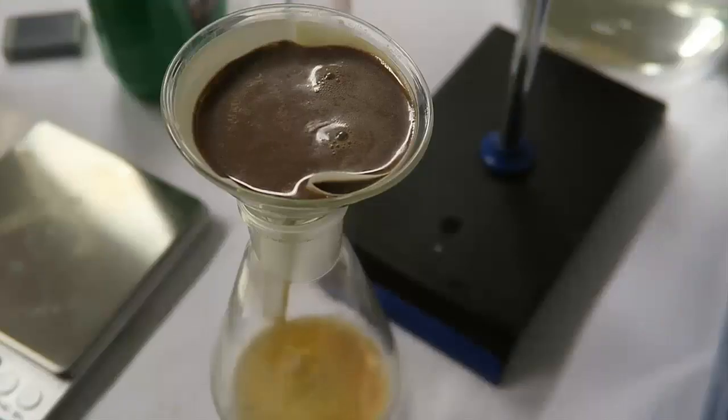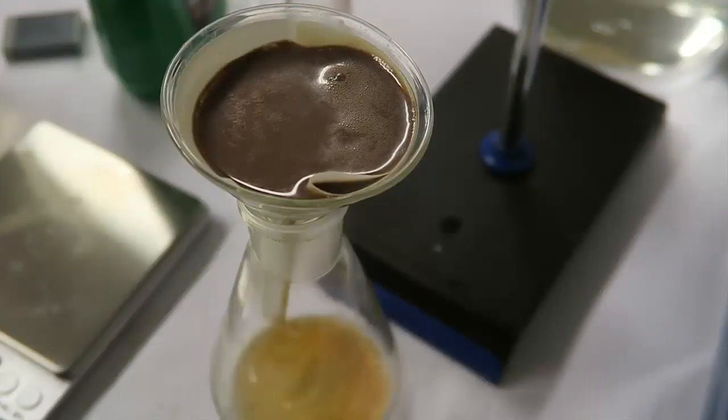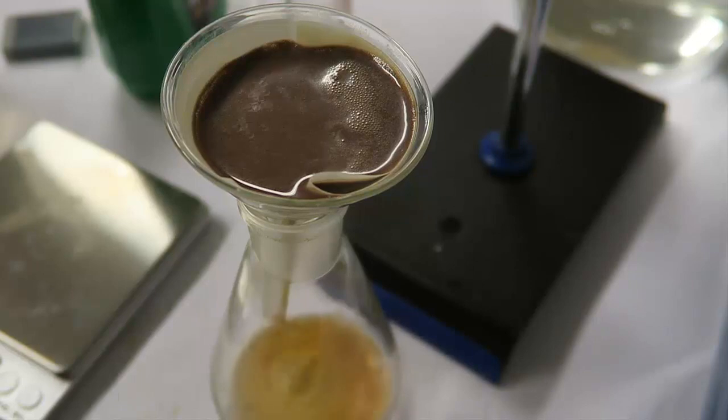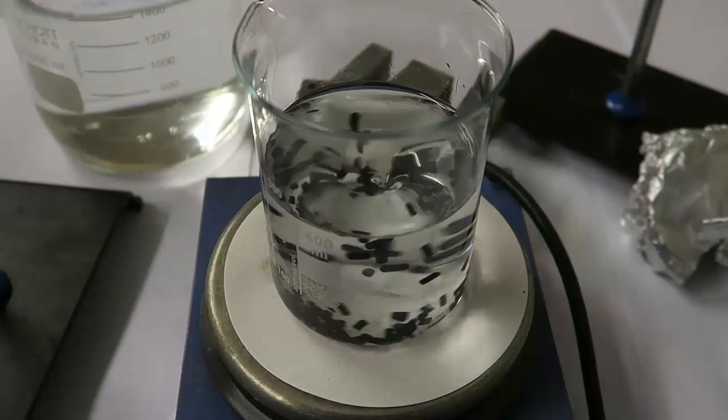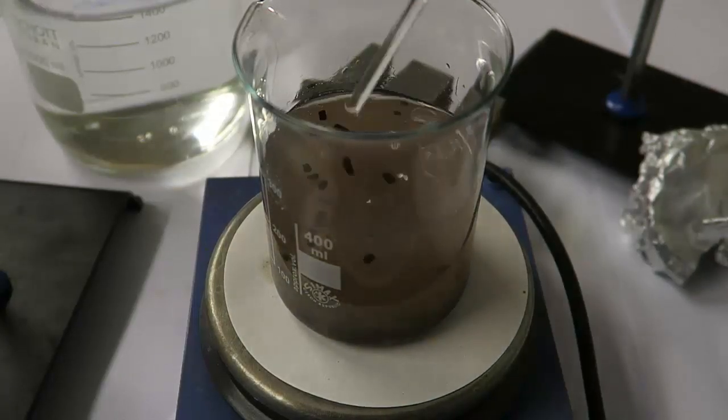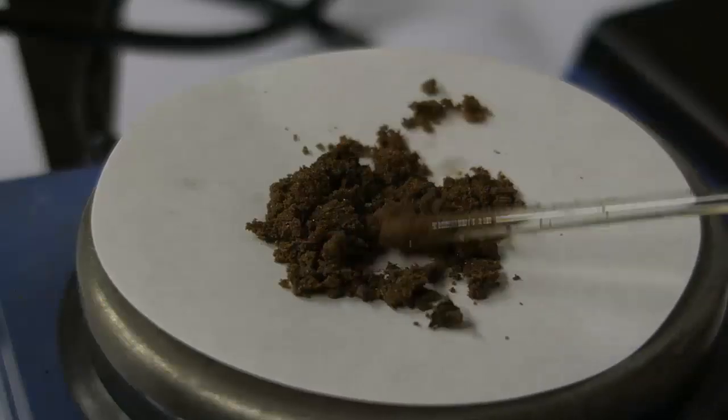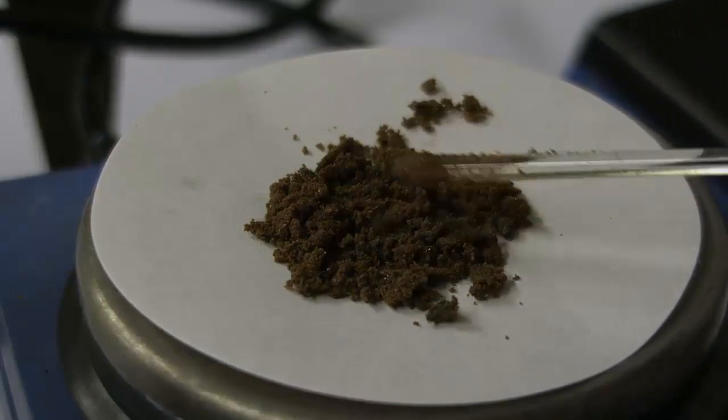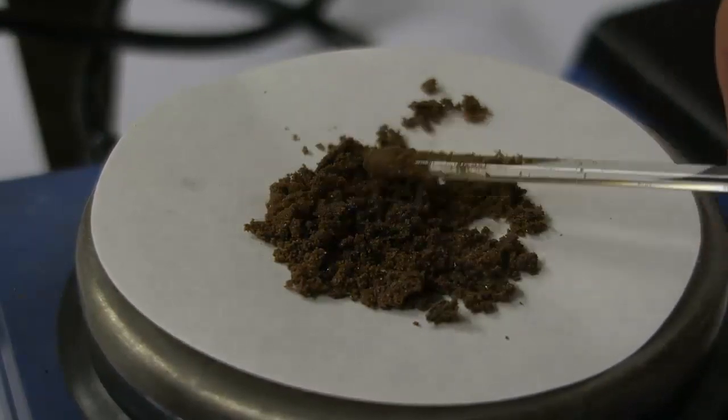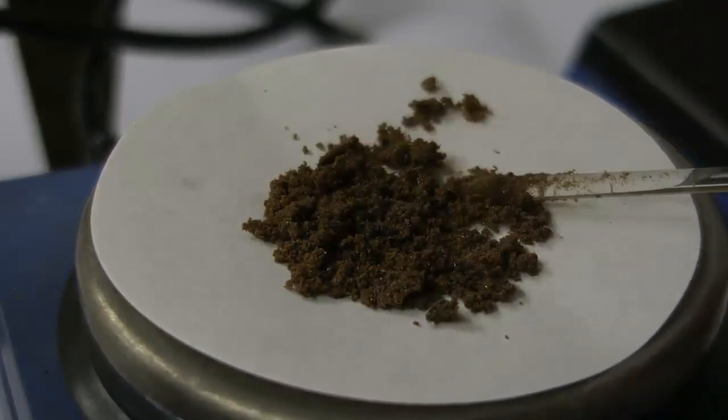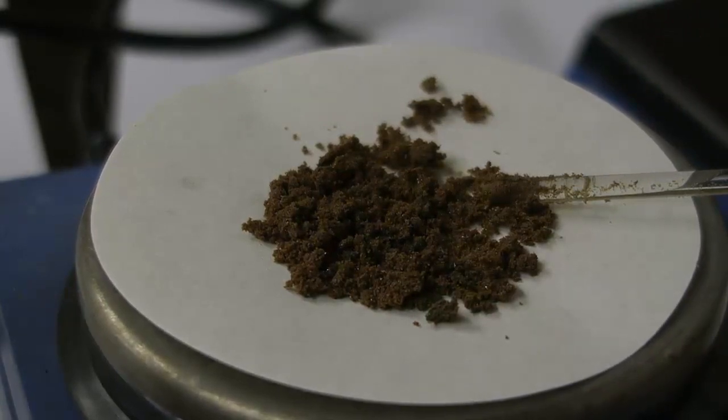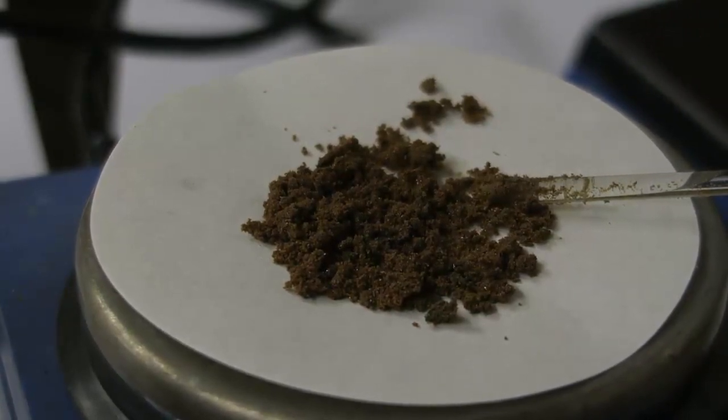The crude anthranilic acid can be then filtered off. It's then recrystallized in hot water. I also added some activated charcoal, trying to get rid of the colored impurities. At the end, I was left with a really bad yield of 47%. Also I couldn't get rid of the color, even though I recrystallized it multiple times. My overall yield, starting from phthalic anhydride, was around 40%.